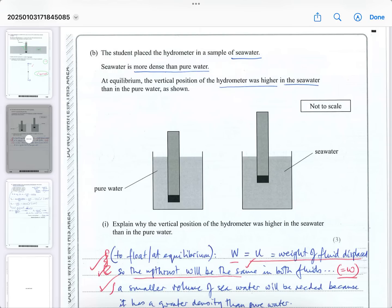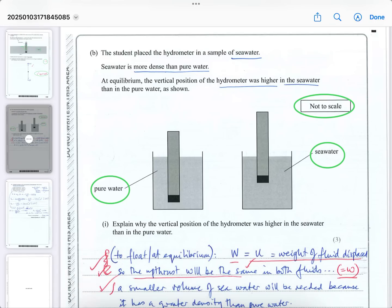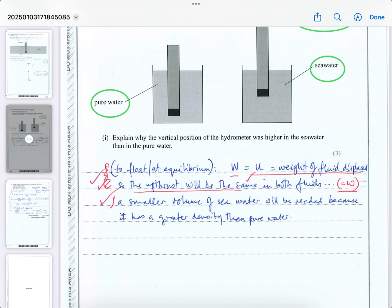The student placed a hydrometer in a sample of seawater. So they've gone from pure water to seawater. Pure water, you can see it's sinking more. Seawater, which is denser, it sinks in less, but it's not drawn accurately. So seawater is more dense than pure water. At equilibrium, that means when the forces are balanced, the vertical position of the hydrometer was higher in the seawater than the pure water as shown. Explain why the vertical position of the hydrometer was higher in the seawater. Well, you've got to now explain it rather than do anything mathematical.